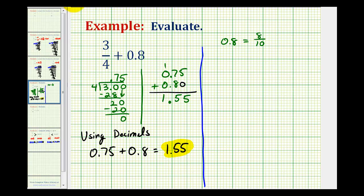This does simplify. There's a common factor of two between eight and ten, so zero point eight is equal to eight tenths, which is equal to four-fifths. So using fractions, we could write this as three-fourths plus four-fifths.